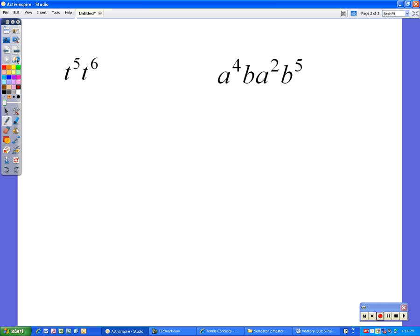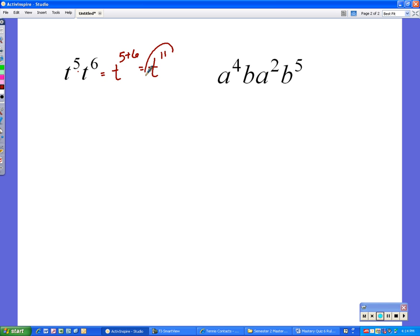Let's do the last two problems. t to the 5th times t to the 6th. Now when we're multiplying and our bases match what we get to do is we get to add up our exponents. So essentially we have the same base of t and we're adding the 5 plus 6 and that turns out to be t to the 11th. Now 11 is positive so we are done.